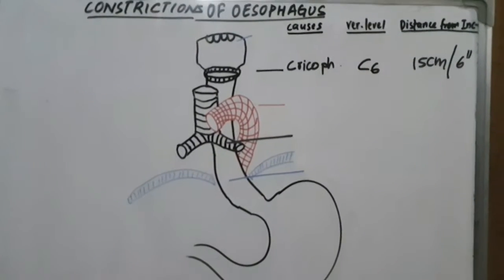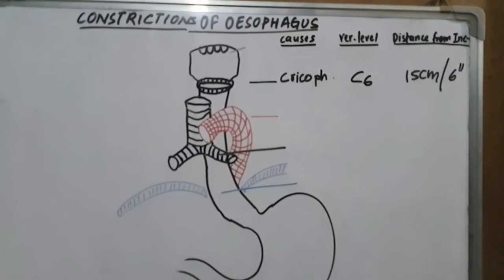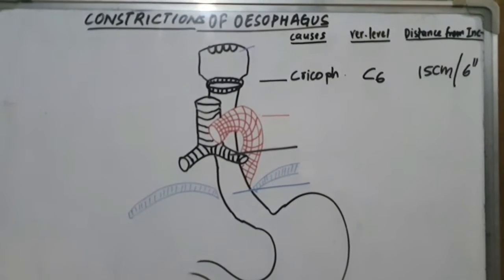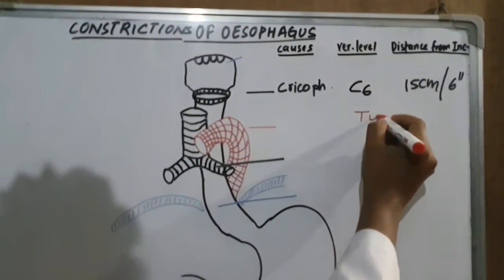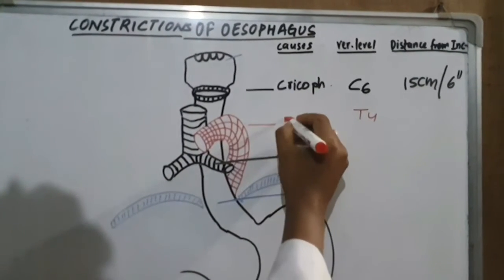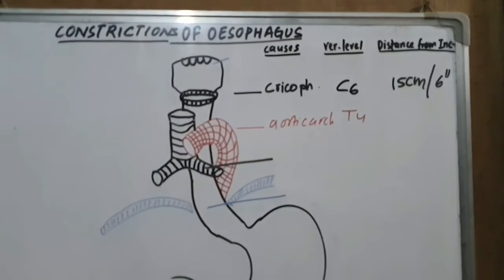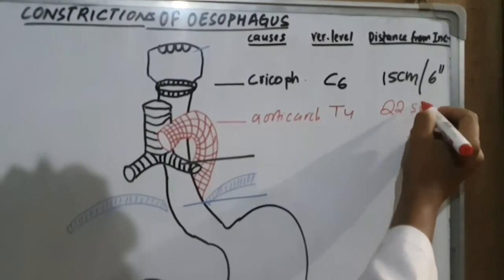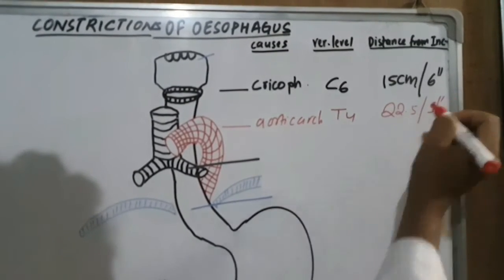The next constriction is at the aortic arch, where the aortic arch crosses the oesophagus. This is at the level of T4, at a distance of 22.5 centimeters, or 9 inches, from the upper incisors.